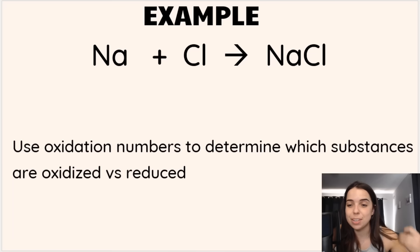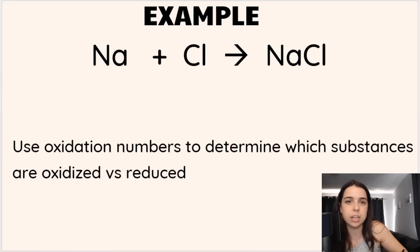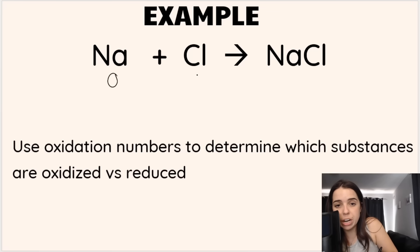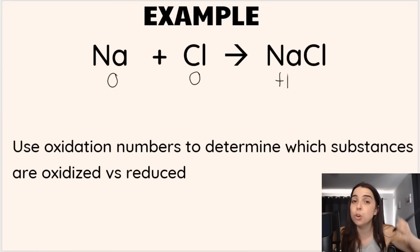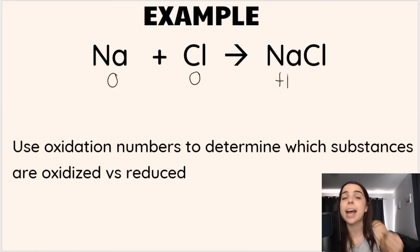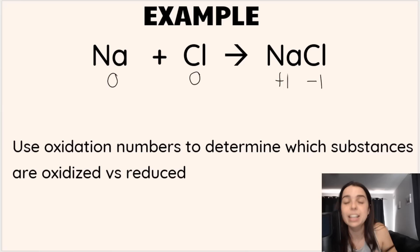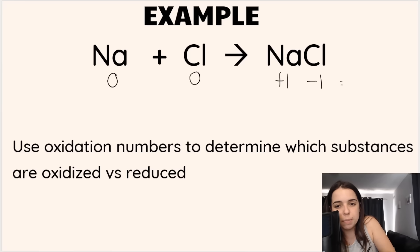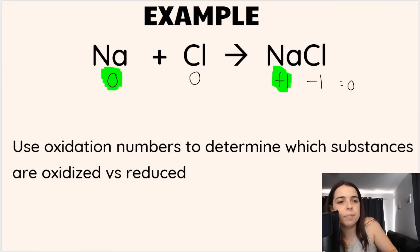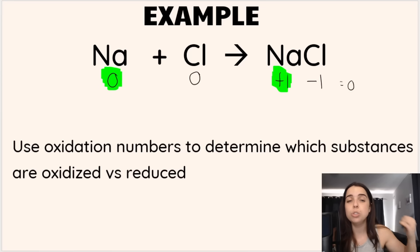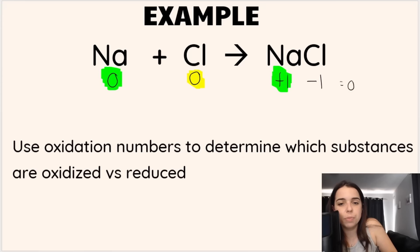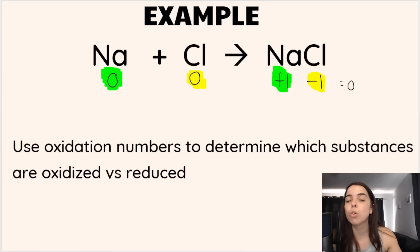We can use oxidation numbers to determine what is oxidized and what is reduced. For sodium and chlorine standing alone, the oxidation number is zero — that's a rule. In NaCl, sodium has an oxidation number of plus one because it's in group one, and chlorine as a halogen has an oxidation number of negative one. Together plus one and minus one gives zero, since NaCl is a neutral compound. Sodium goes from zero to plus one — an increase — so sodium is oxidized. Chlorine goes from zero to negative one — a decrease — so chlorine is reduced.